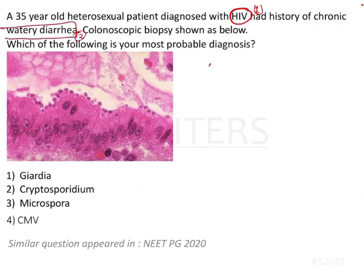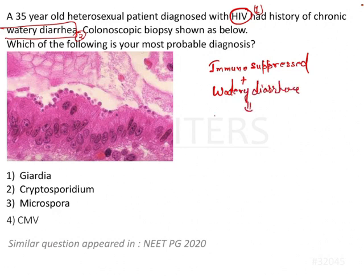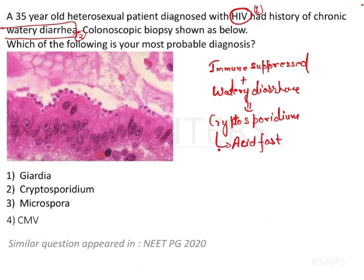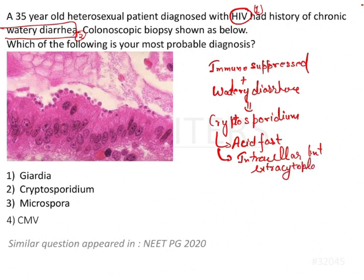In an immunosuppressed patient with watery diarrhea, the most probable diagnosis is cryptosporidium. Cryptosporidium is an acid-fast parasite. It is intracellular but extracytoplasmic — it is not seen in the cytoplasm but is away from it. So it is an intracellular but extracytoplasmic organism or parasite.